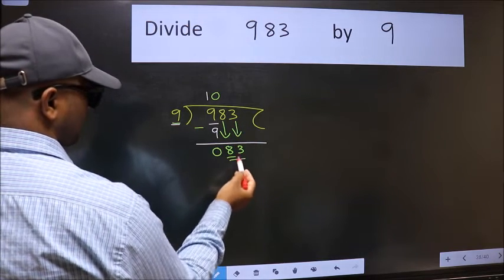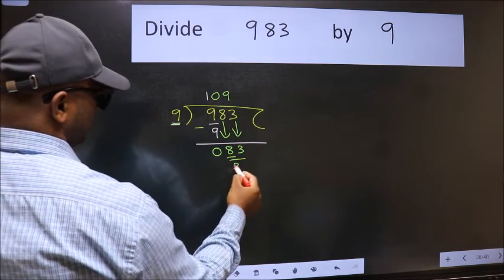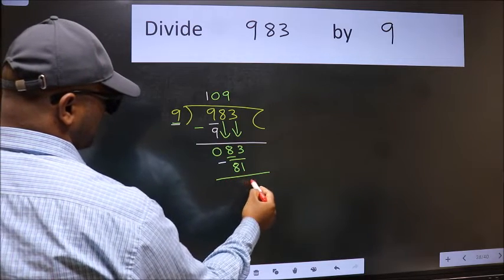Now 83. A number close to 83 in the 9 table is 9 nines, 81. Now we should subtract. We get 2.